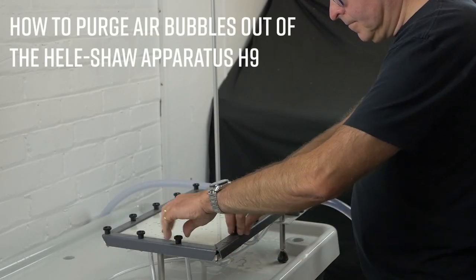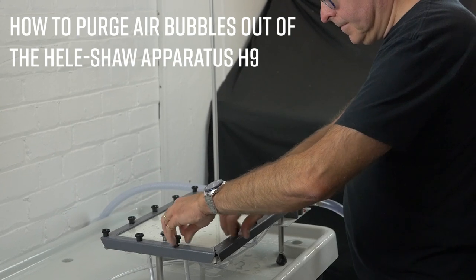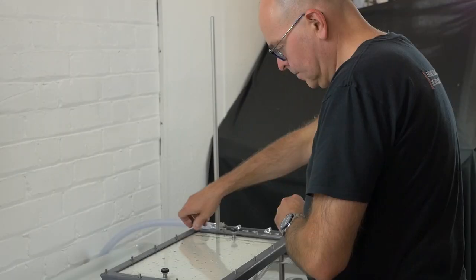Purging air bubbles out of the Helishore apparatus requires the channel to be cleaned from any traces of grease such as fingerprints which can trap air bubbles.